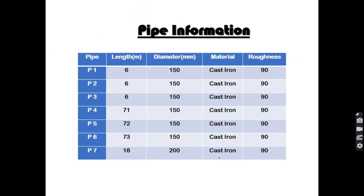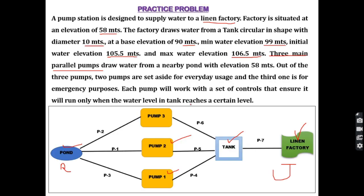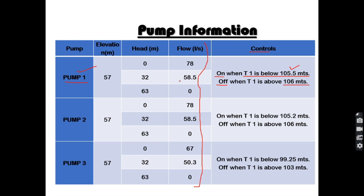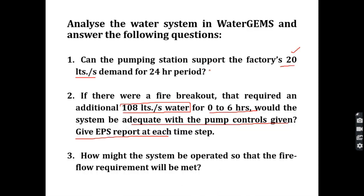The approach will be: first model the network in WaterGEMS with all the pipe information, tank elevations, pump elevations, and control conditions. Then analyze step by step — first for a fixed demand of 20 liters per second, then create an additional demand of 108 liters per second for 6 hours, check whether the system is adequate, and if not, suggest a solution.